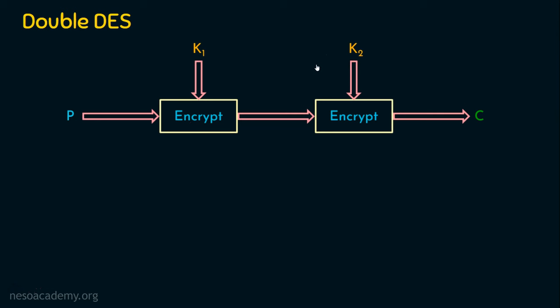Remember, K1 is not equal to K2. In DES, the effective key length is 56 bits, so K1 is 56 bits and K2 is another 56 bits, giving a total of 112 bits of key used here. But it is not used in a single stage — it is used as 56 bits in one encryption and the remaining 56 bits in another encryption. This is about the double DES encryption.